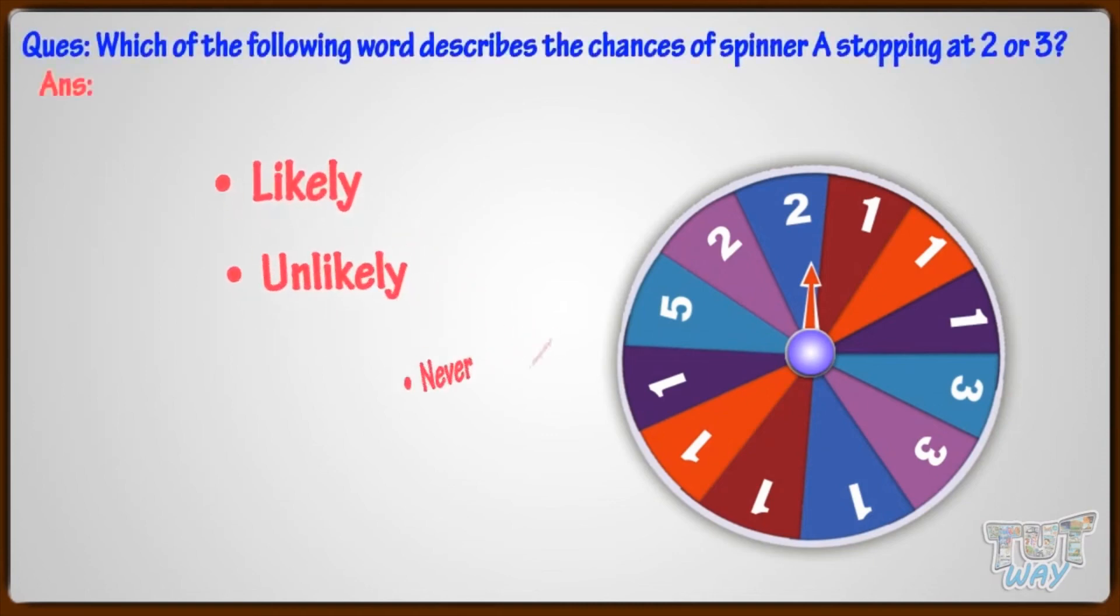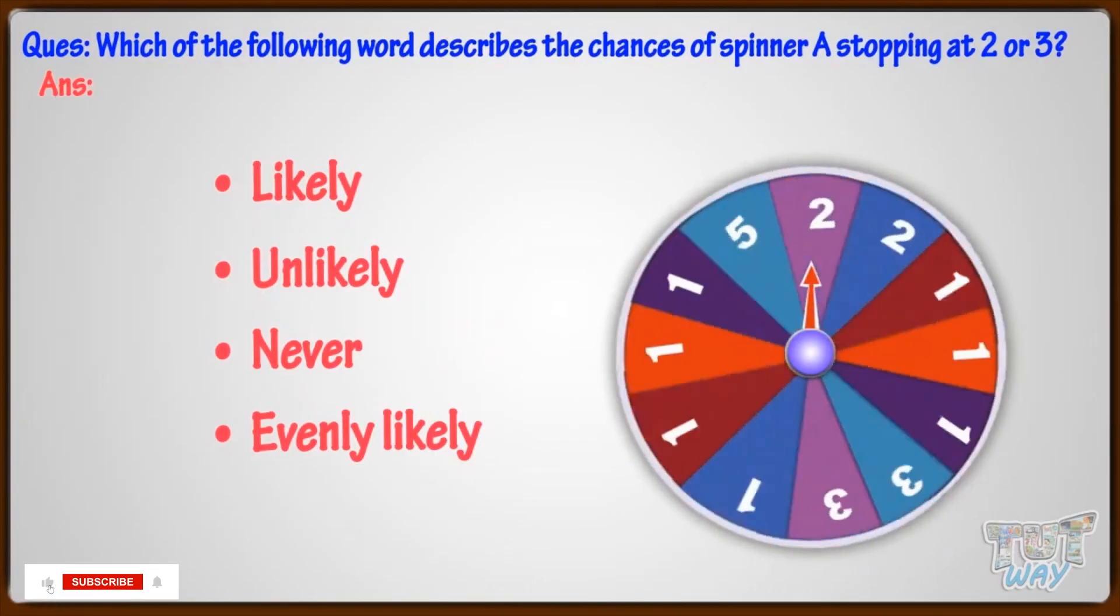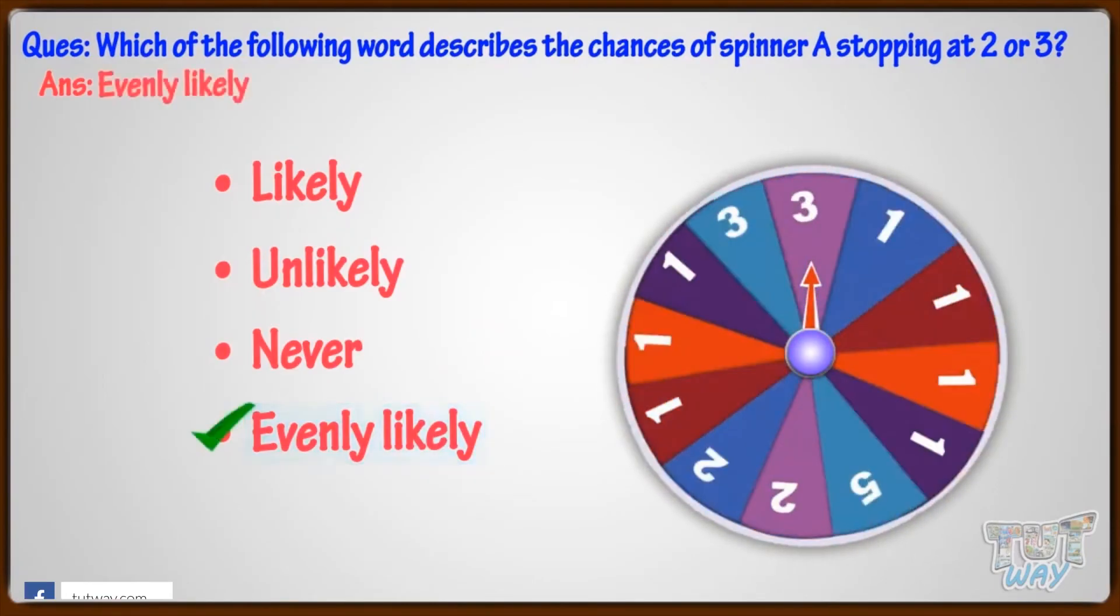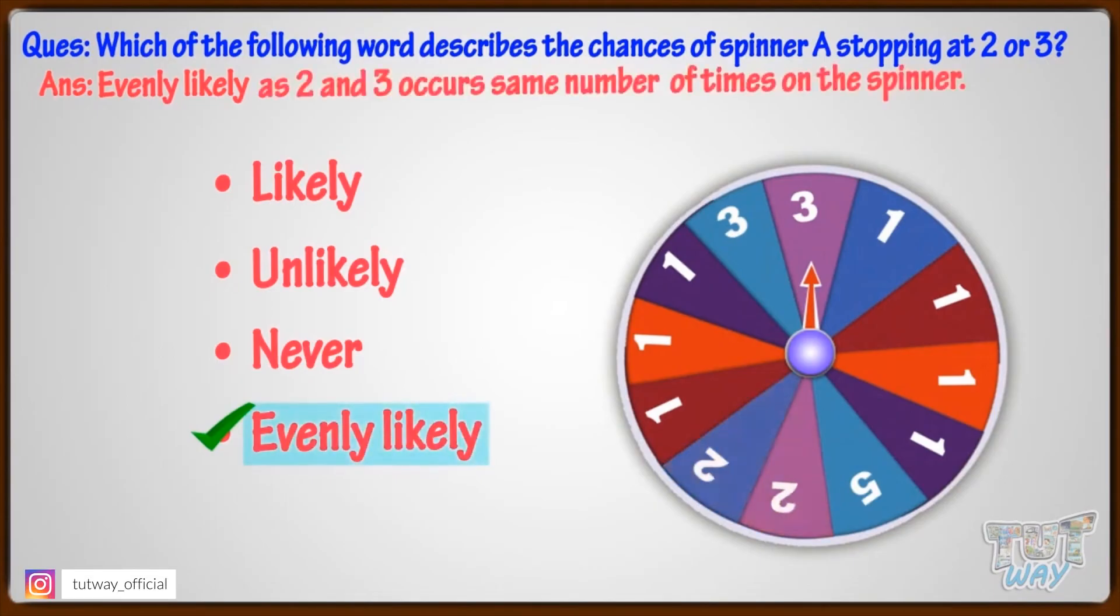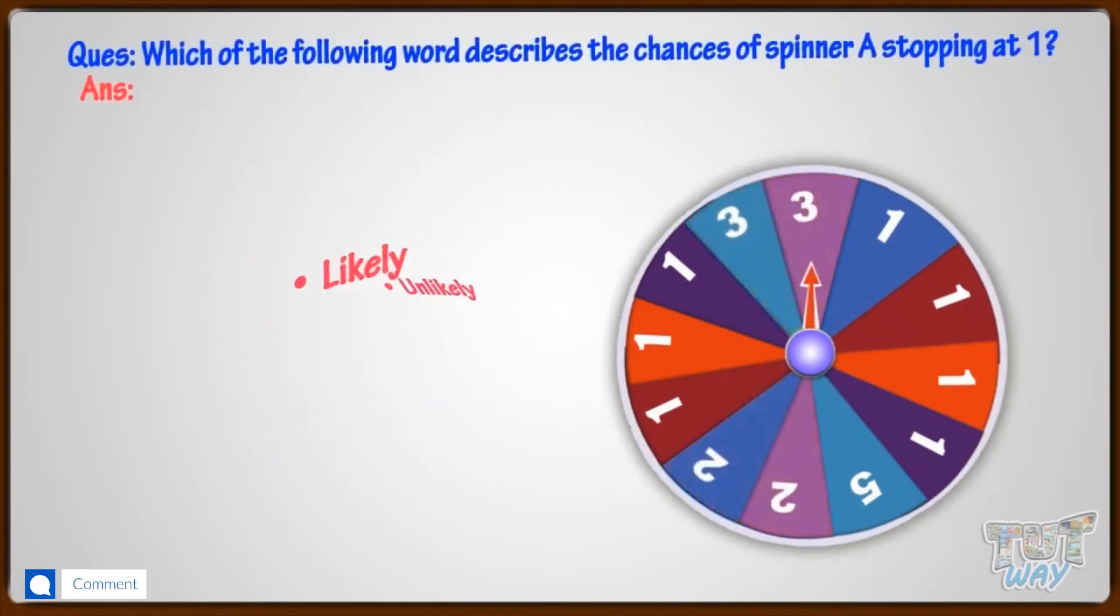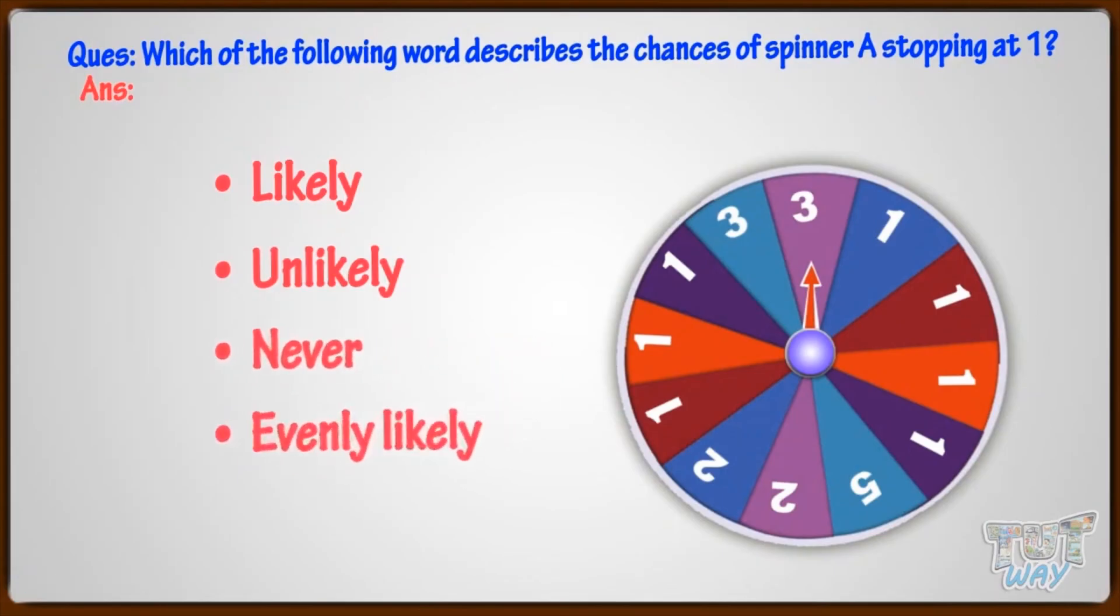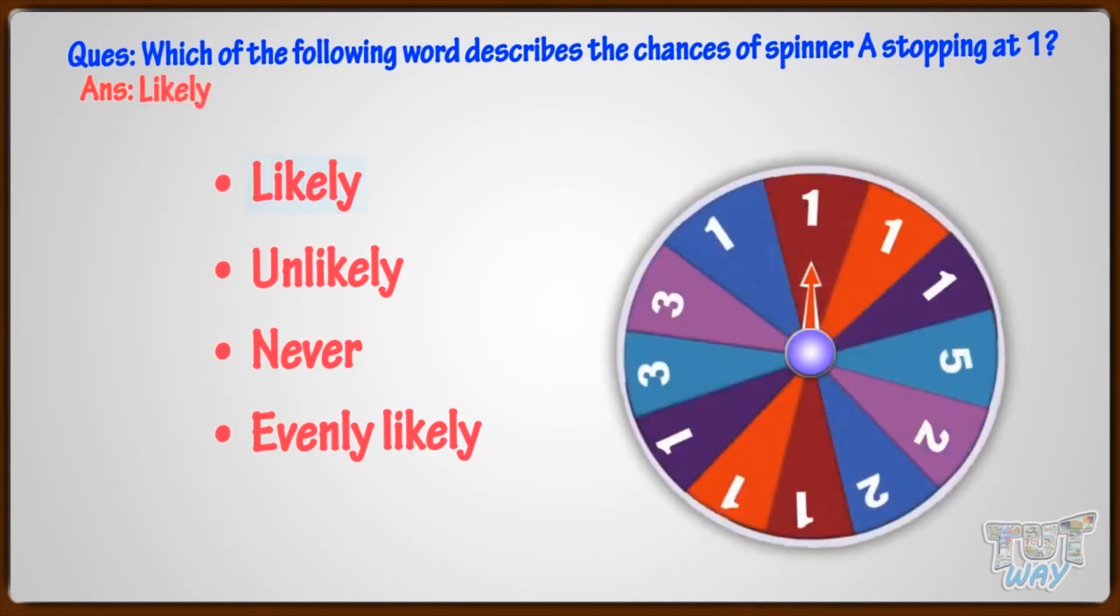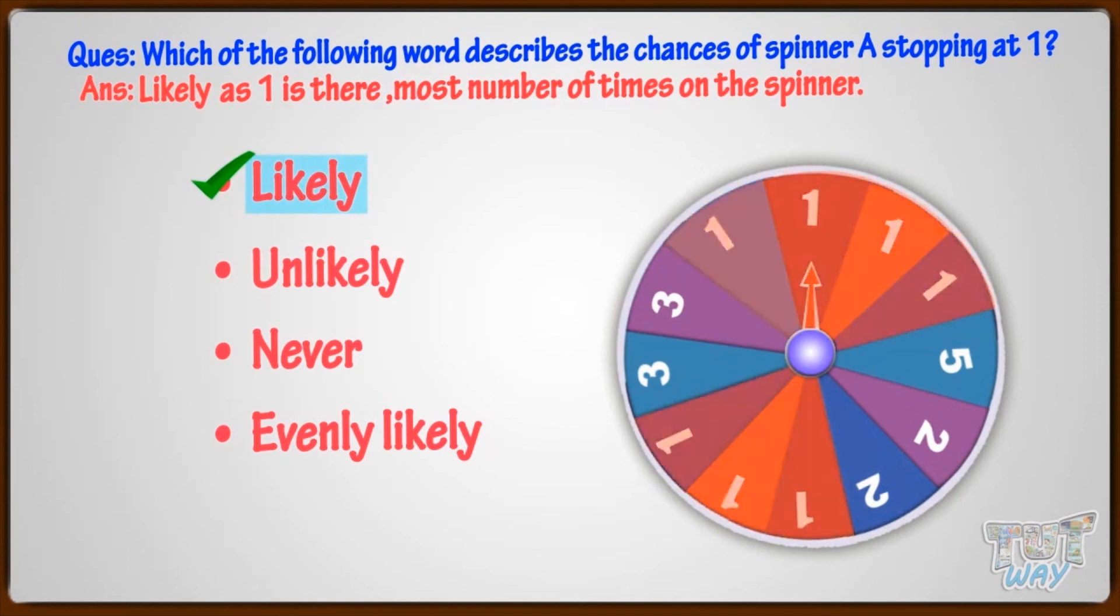Which of the following word describes the chances of spinner A stopping at 2 or 3? It's evenly likely, as 2 and 3 occur the same number of times on the spinner. Now, which of the following word describes the chances of spinner A stopping at 1? Likely, as 1 is there most number of times on the spinner.